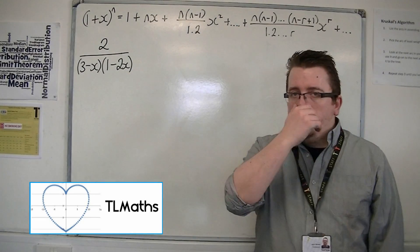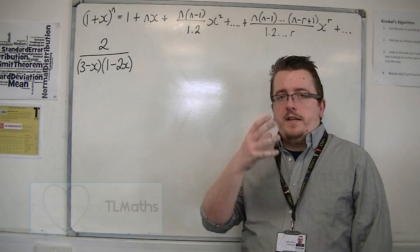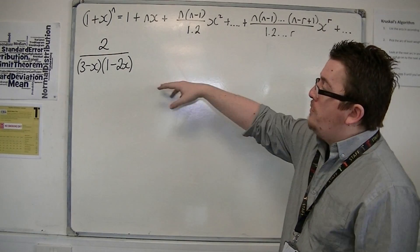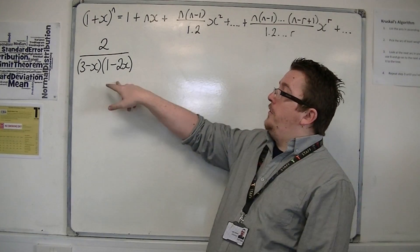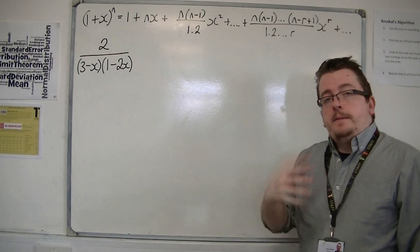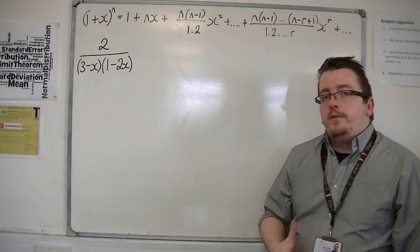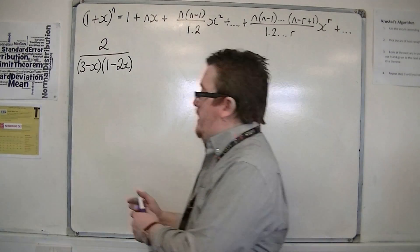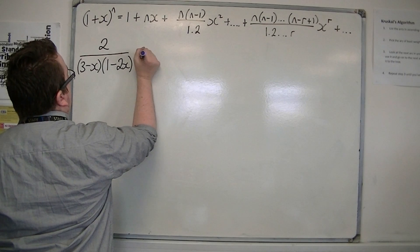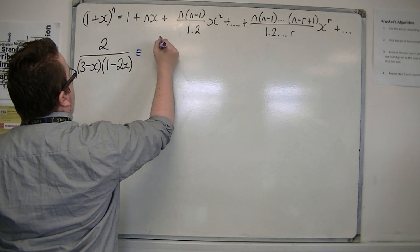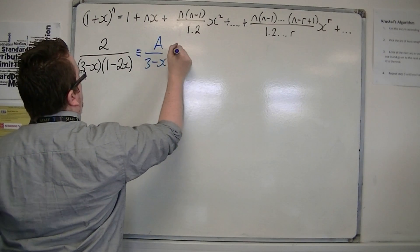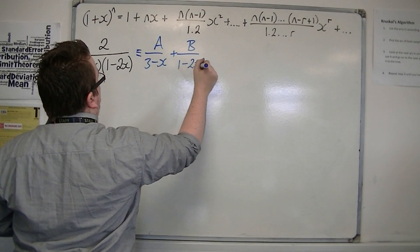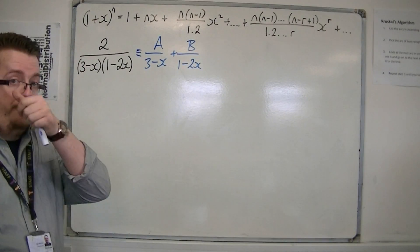Let's say we want to find the binomial expansion of 2 over (3 minus x)(1 minus 2x). In order to do that, I'm going to have to use partial fractions to rewrite this in the format of A over (3 minus x) plus B over (1 minus 2x). So I'm going to have to find what A and B are first.